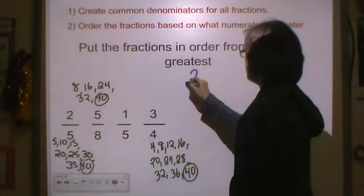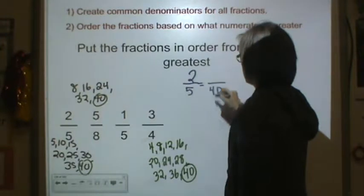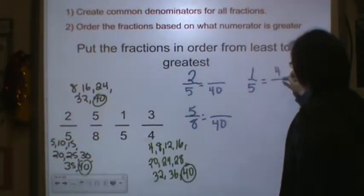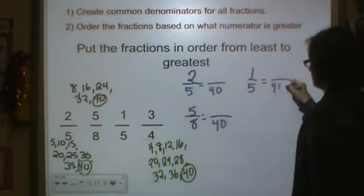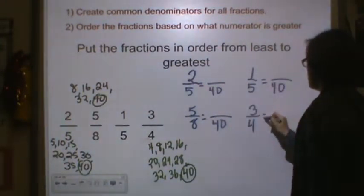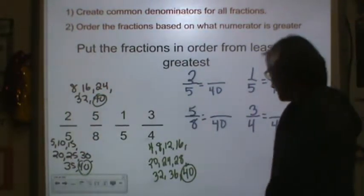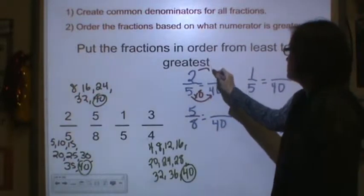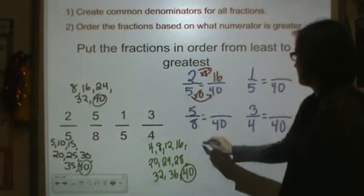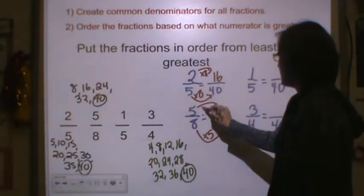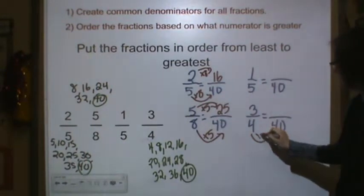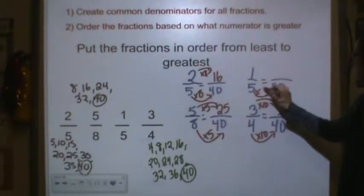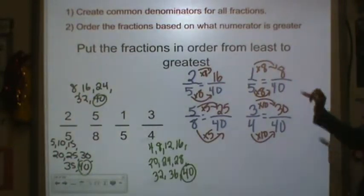Now let's convert. 2/5 is equal to something over 40. 5/8 is equal to something over 40. 1/5 will be equal to something over 40, and 3/4 will be equal to something over 40. Now let's find our numerators. 5 times 8 is 40, so 2 times 8 is 16. 8 times 5 is 40, so 5 times 5 is 25. 4 times 10 is 40, so 3 times 10 is 30. 5 times 8 is 40, so 1 times 8 is 8.